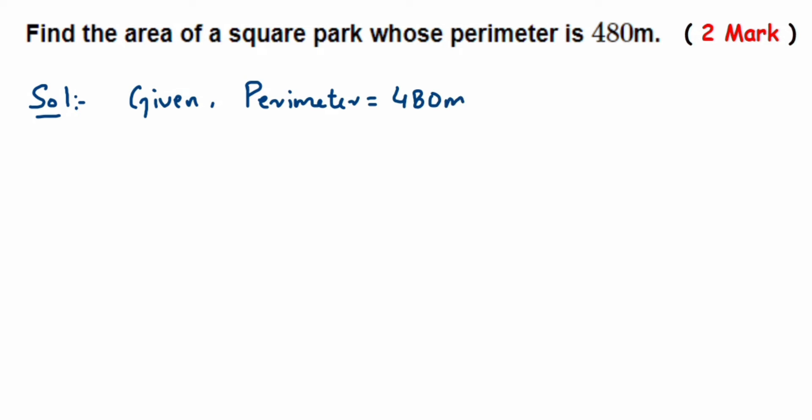We have to find out the area. So area is unknown, but we know the area formula: it's side into side. So first we have to find out the side using the perimeter formula. So perimeter here is... perimeter is equal to 480 meters.